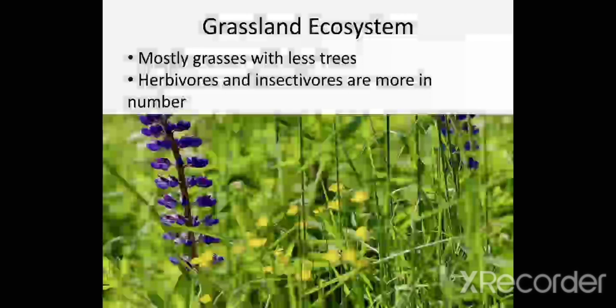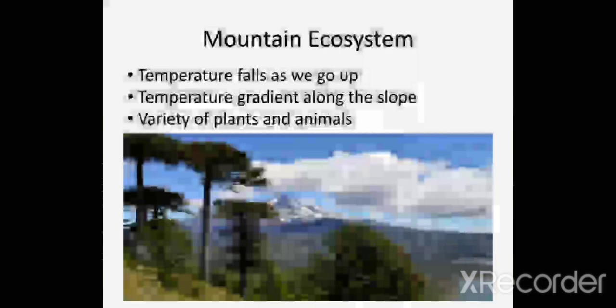Mountain ecosystem: mountains are near to equator, therefore they are subjected to variation in climatic condition. Some mountains are very cold and some mountains are warm in condition.